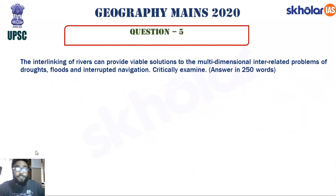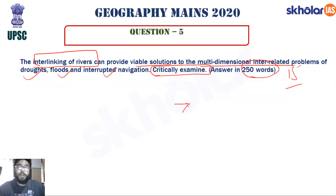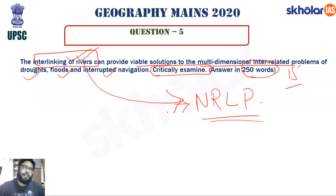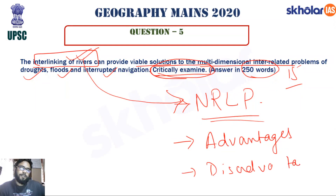Question five (250-word, 15-mark question): 'The interlinking of rivers can provide a viable solution to multi-dimensional interrelated problems of drought, floods, and interrupted navigation — critically examine.' When we talk about interlinking of rivers, the first thing that comes to mind is the National River Linking Project, initiated in the 1970s by the Planning Commission in collaboration with the World Bank. You must discuss advantages and then disadvantages, concluding on a positive note.